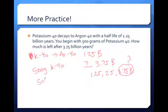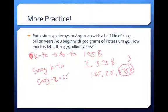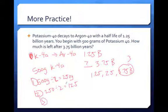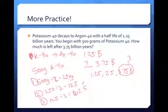We have 500 grams of original material. We divide by 2 and get 250 grams — that's one half-life. After two half-lives, we take 250 and divide by 2, getting 125 grams. After three half-lives, we take 125 grams and divide by 2, which equals 62.5 grams. This is just another way you can use half-life information to calculate either how much is left, how long something took, or how old something is. Scientists do these types of calculations all the time to figure out how old the earth is.